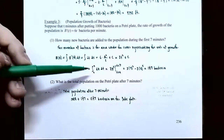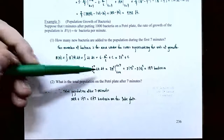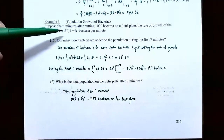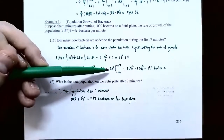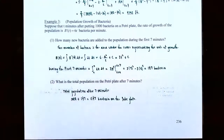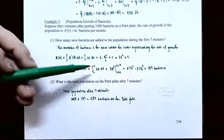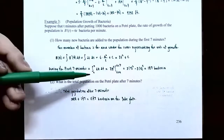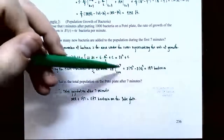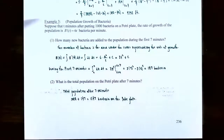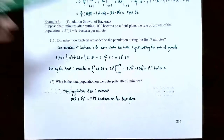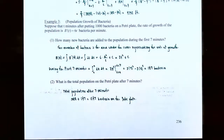During the first 7 minutes, the population growth is the definite integral from 0 to 7 of 6t dt. The antiderivative is 3t squared, so evaluate using the Fundamental Theorem: 3 times 7 squared minus 3 times 0 squared. That is 3 times 49 minus 0, which equals 147. The population of bacteria on the petri plate increased by 147 between 0 and 7 minutes.